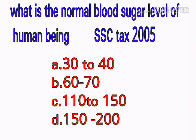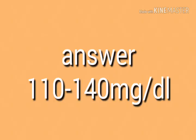What is the normal sugar level of a human being? Options: a) 30 to 40 mg per dl, b) 60 to 70 mg per dl, c) 110 to 150, d) 150 to 200. Your answer is 110 to 140 mg per dl.